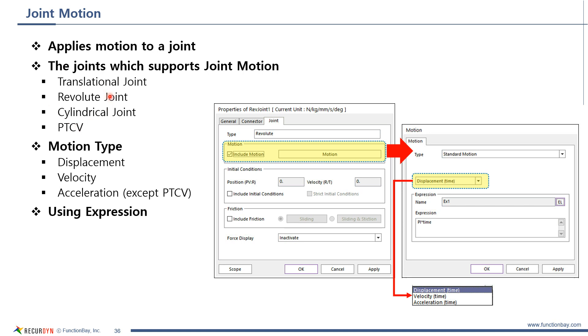The following four joints support joint motion: translational joint, revolute joint, cylindrical joint, PTCV.